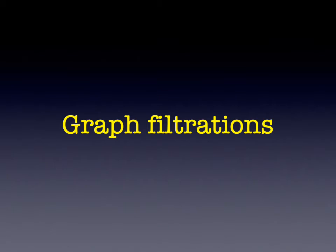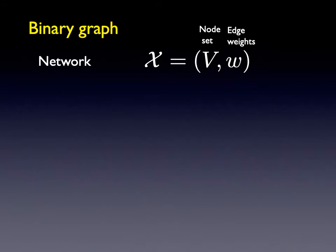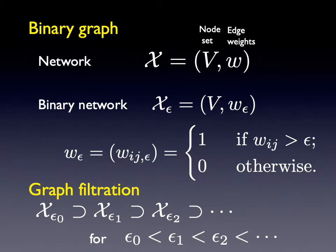Let's explain what graph filtrations are — this is explained in detail in one of our papers. A graph filtration is defined from a weighted graph or network consisting of a node set and edge weights. Starting with this weighted graph, we threshold it at epsilon, which serves as the filtration value. Any edge smaller than epsilon is thresholded, making the network binary. As we increase the threshold value, we obtain a filtration — a nested sequence of subgraphs. The concept of graph filtrations was first introduced by our group in 2011 in MICCAI and in 2012 in IEEE Transactions on Medical Imaging.